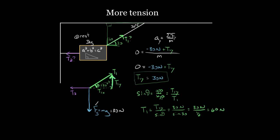That might seem crazy — T1 is 60 Newtons? The weight of this chalkboard is only 30 Newtons. How can the tension in this rope be 60 Newtons? If we just hung the chalkboard by a single string over its center of mass, you'd get a tension of 30 Newtons. But here, the vertical component of T1 has to be 30 Newtons to balance gravity. That's only part of the total tension. So if part of the total tension is 30 Newtons, all of the tension has to be more than 30 — in this case, 60 Newtons — because it's at an angle.